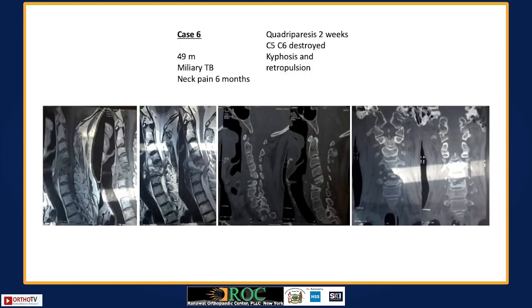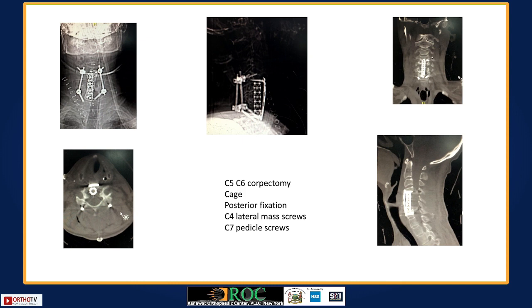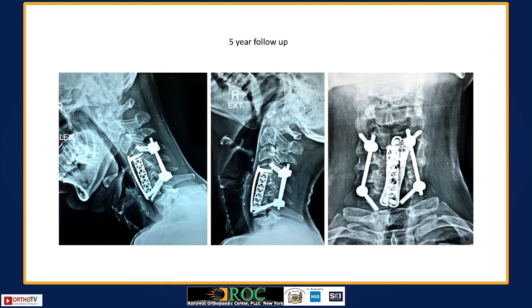A 49-year-old with miliary tuberculosis presented with neck pain for six months and two weeks of quadriparesis. MRI and CT show C5-6 destruction with kyphosis and retropulsion. With two vertebral bodies involved, a two-body corpectomy was needed. In such cases, front and back fixation is always performed, as anterior alone would be insufficient. Posteriorly, C7 pedicle screws and C4 lateral mass screws were used, combined with an anterior two-level corpectomy.